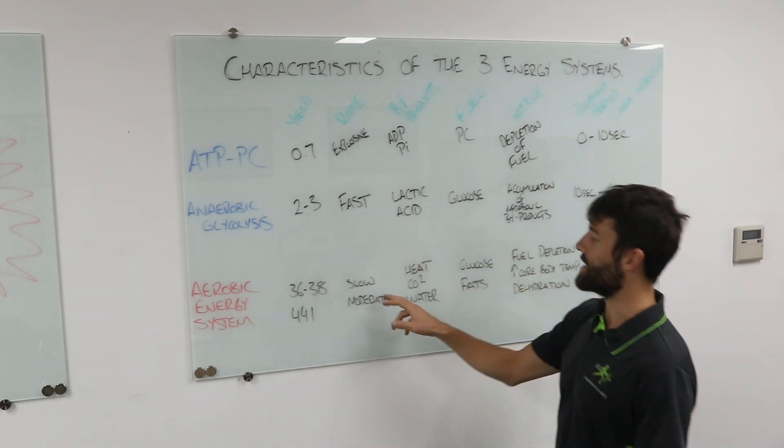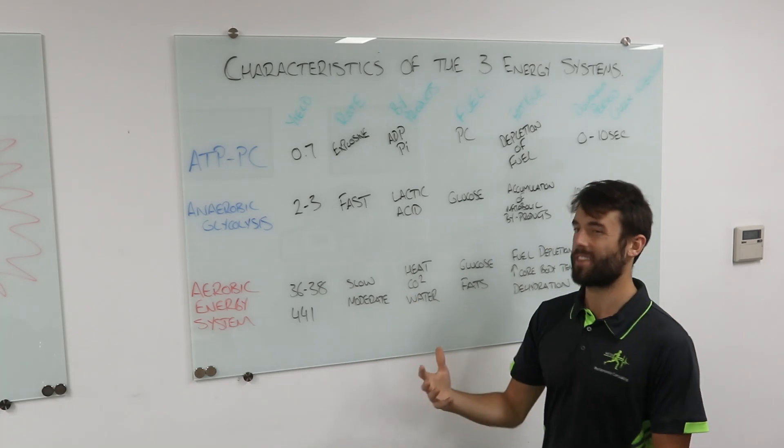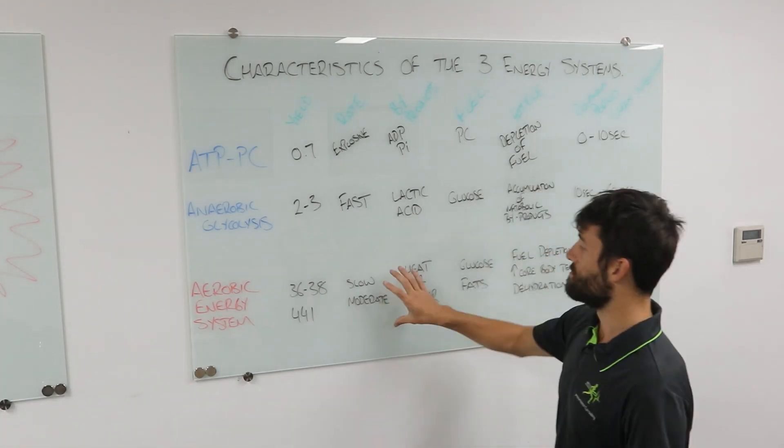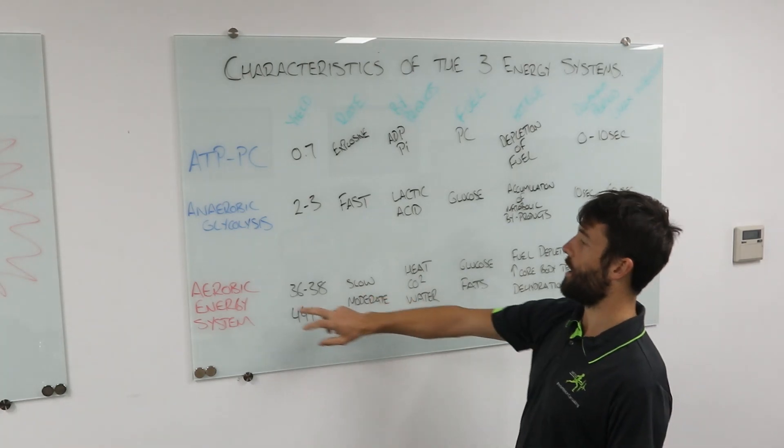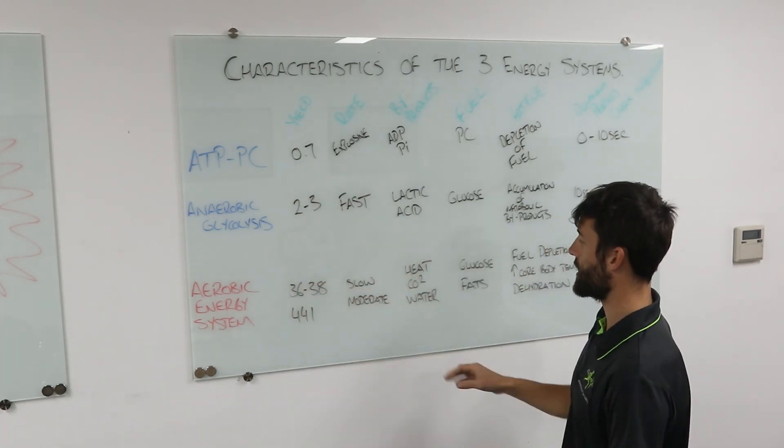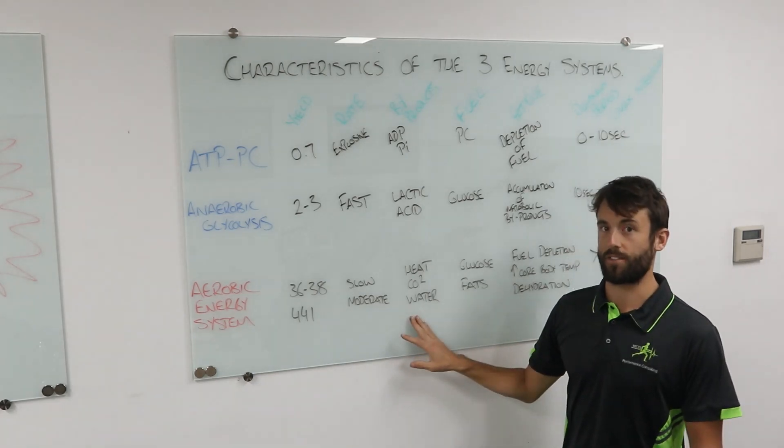In terms of that rate, it is slow to moderate. If we're breaking down glycogen, we could still say moderate. If we're breaking down fats, very slow. Make sure that we understand it is the slowest of the three. The rate of production is the slowest of the three.